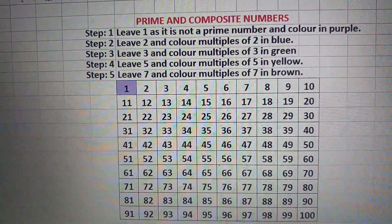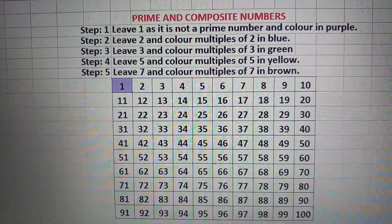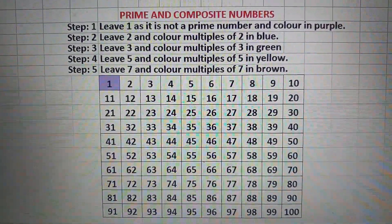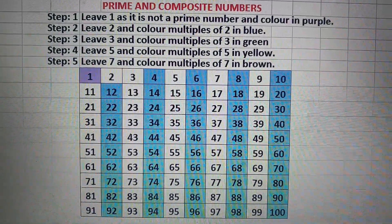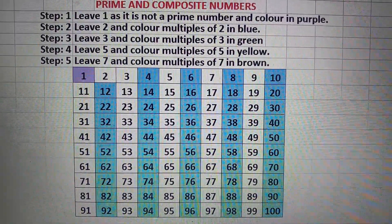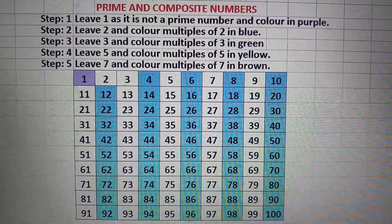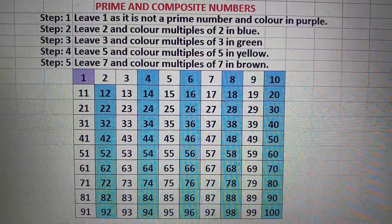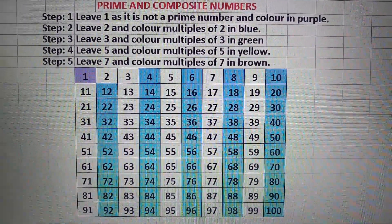Even numbers are those that end with 2, 4, 6, 8, and 0. Therefore 4, 6, 8, 10, 12, 14, 16, 18, 20, etc. are even numbers and are multiples of 2. That's why we have colored them blue.